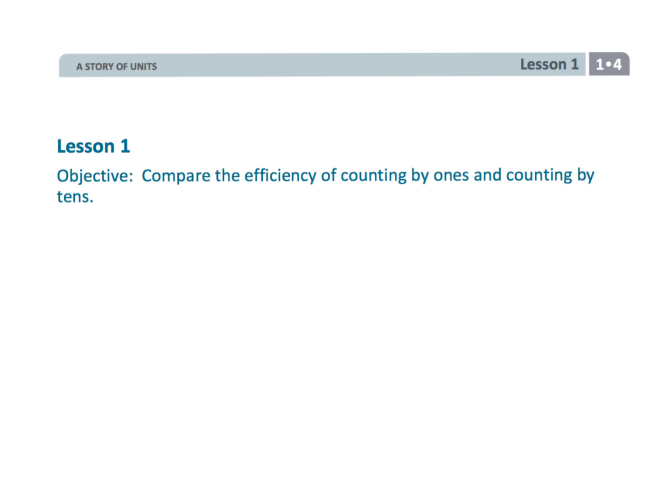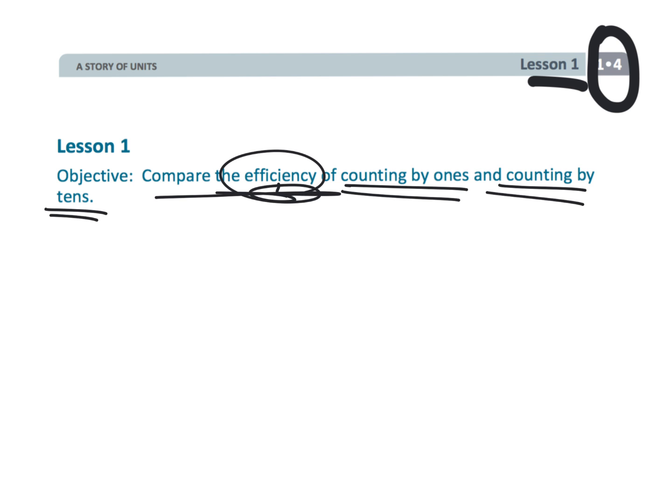And that wraps up first grade module four lesson one, where students are beginning to develop an understanding of the place value chart by appreciating the efficiency of counting by ones versus counting by tens. And that means you.